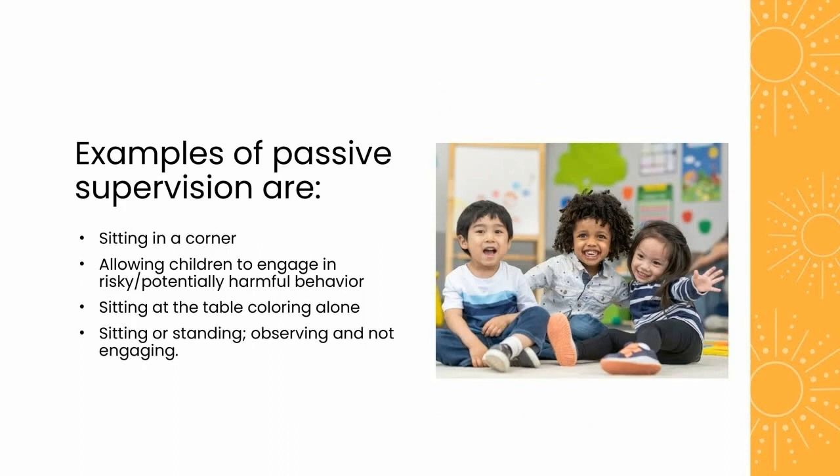Examples of passive supervision include sitting in a corner of the classroom scrolling through your phone without actively monitoring the children's activities, allowing children to engage in risky or potentially harmful behavior such as climbing on furniture or playing with sharp objects without actively intervening or redirecting them to a safer activity, sitting at the table coloring alone, or sitting or standing and observing without engaging.